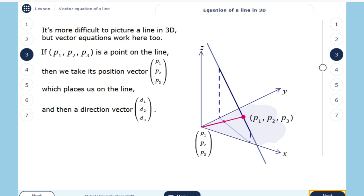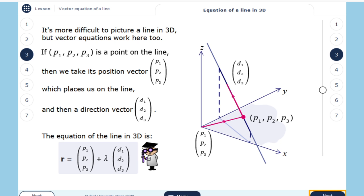And then I just need the direction vector, though now in three dimensions I will have three components. So the equation of the line in 3D is R equals the position vector plus lambda times a direction vector.